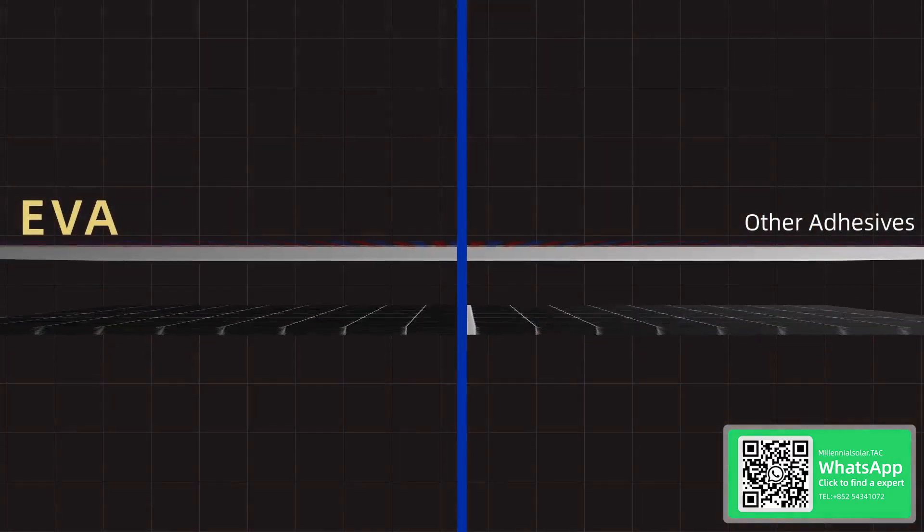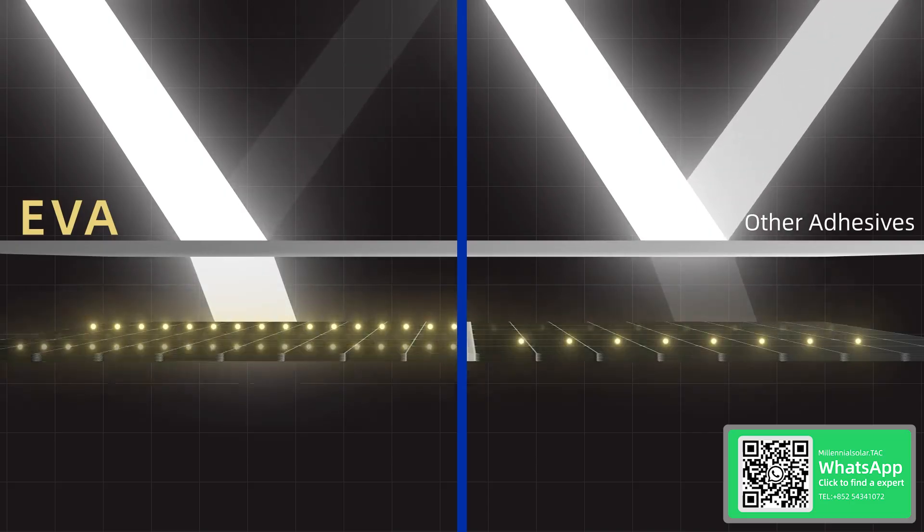EVA offers high light transmittance, ensuring effective penetration of sunlight and enhancing the photoelectric conversion efficiency of PV panels.